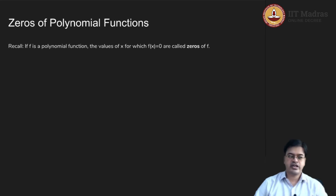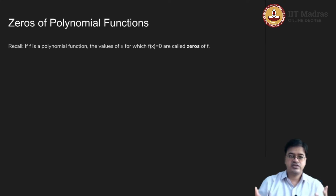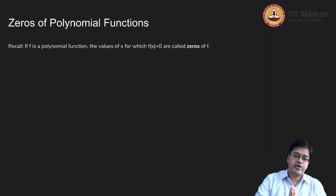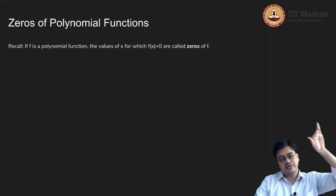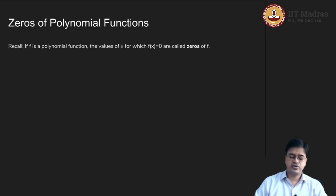When we studied quadratic functions, we had several methods of identifying their zeros. For example, we tried to graph the quadratic function by plotting ordered pairs on graph paper, joining the curve smoothly, and identifying the axis of symmetry. Wherever the curve intersects the x-axis, we call that a zero of the function.